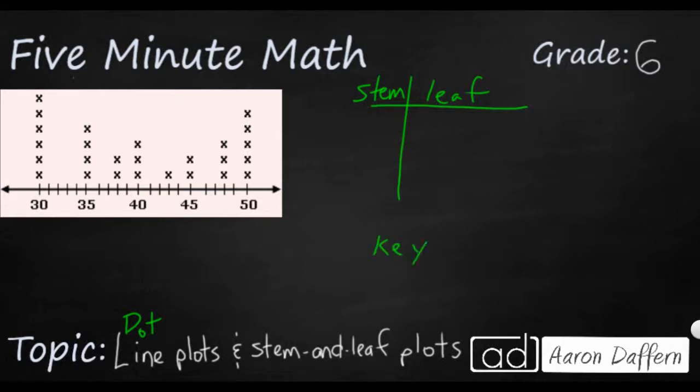They're always going to let you know what the stem and leaf plot is, and so a simple key might be something like this: 2 slash 1, so that's going to represent our stem and our leaf, and that's going to equal 21.